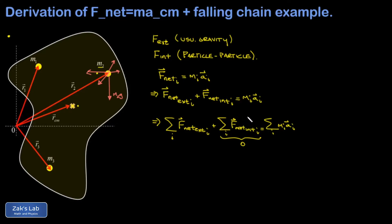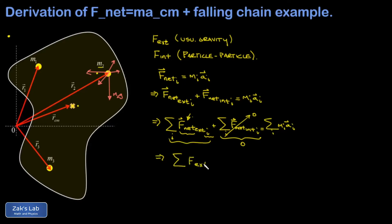I also want to make a point about the sum of net external forces on the ith particle over all particles from 1 to n. This is actually a double sum, because the net force on the ith particle is itself a sum of all external forces on that particle. When I take that sum for all particles as i goes from 1 to n, that gives me the sum of every single external force acting on the extended body - we can just write this as the sum of all external forces.